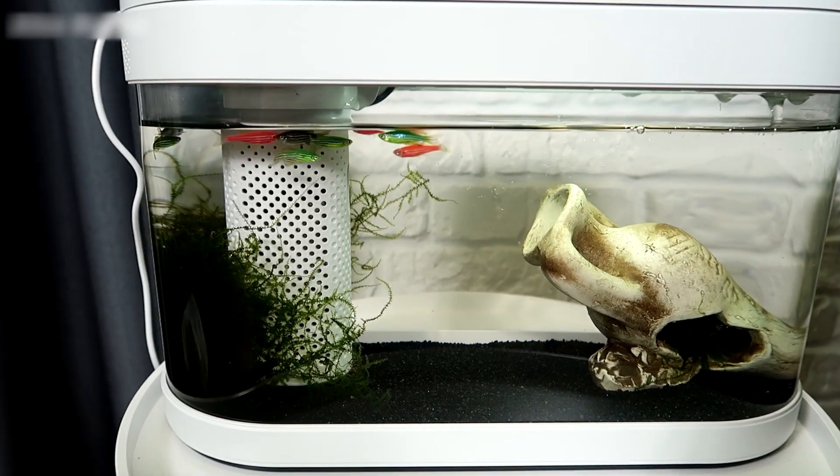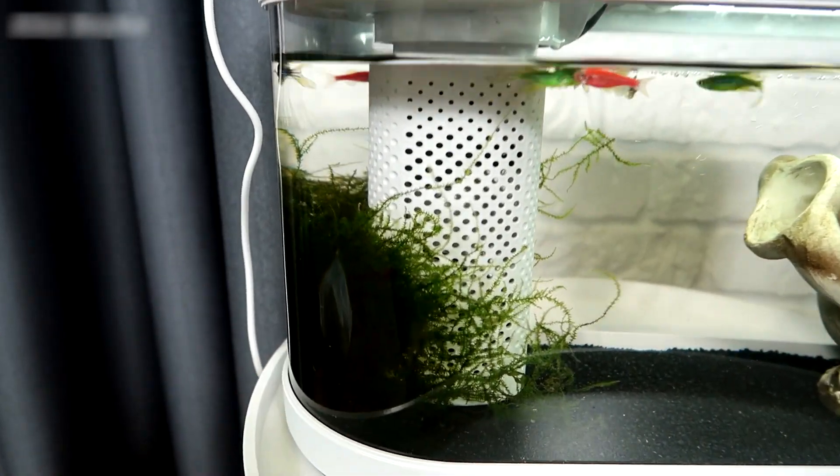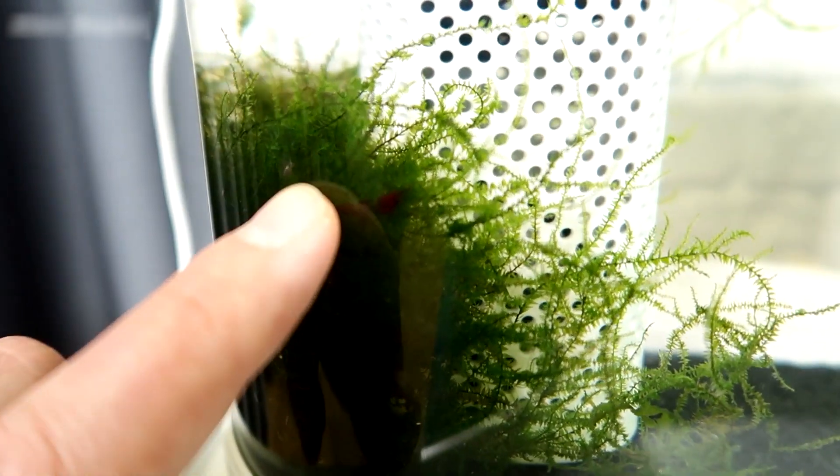In my opinion, it's now in better shape, providing ample space for the fish. The plant you see is Vesicularia dubiana, the haven for my shrimp.